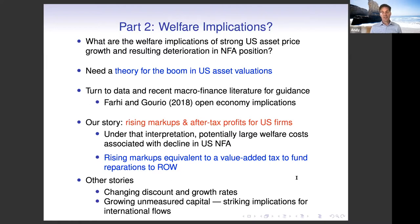If rising markups is the correct interpretation, then the decline in the U.S. net foreign asset position is a symptom of a large welfare cost for American residents. The best way to think about that welfare loss is: if American corporations have increased their markups and foreigners own a large portion of the equity of those corporations, it's equivalent to what would have happened if the U.S. government levied a value-added tax and used some of that revenue to make gifts to foreigners. That's why you get a substantial welfare cost.